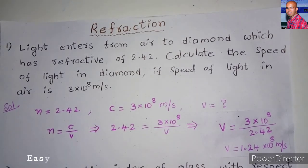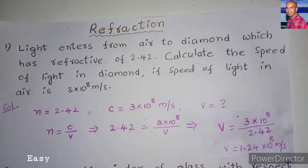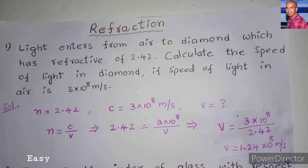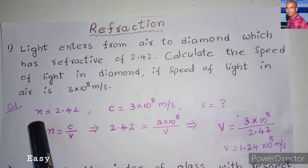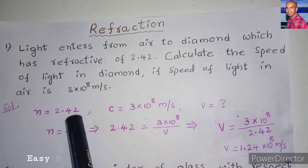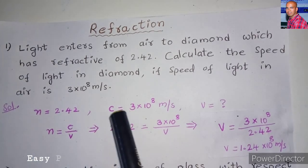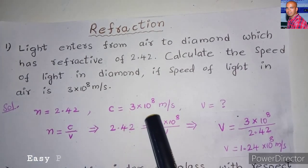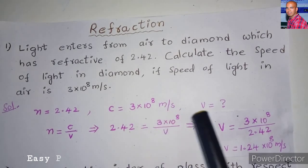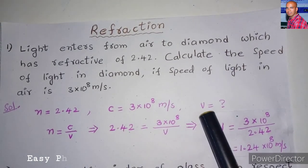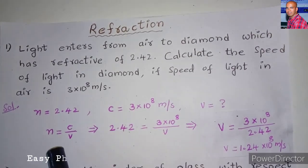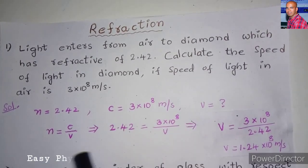Let us write down what is given in the problem. The refractive index is given as 2.42. The speed of light in air is 3 × 10⁸ meters per second. We need to find the speed of light in diamond, V. The formula relating these three terms is n = C/V.